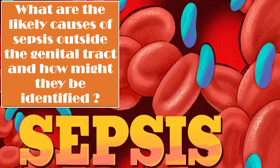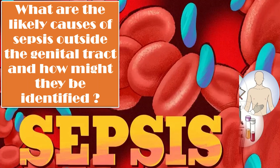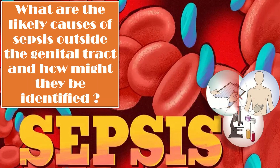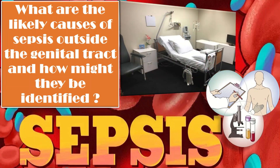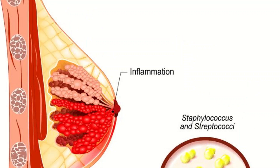What are the likely causes of sepsis outside the genital tract and how might they be identified? A general history and examination should be carried out to try to identify the source of sepsis. Women should be assessed clinically, and if unwell or with dehydration or vomiting, admission should be considered.